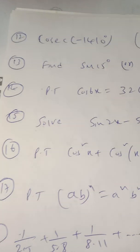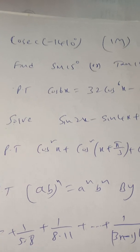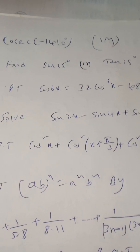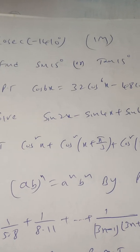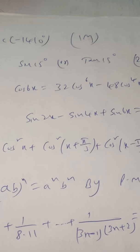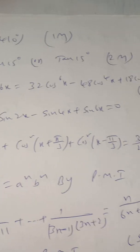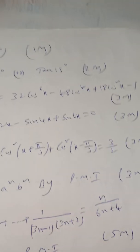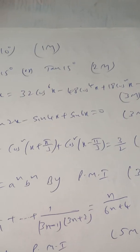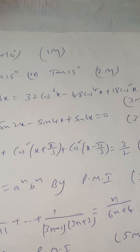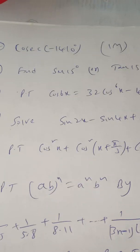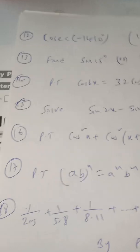One more 3-mark trigonometry question they may ask: prove that cos²x + cos²(x + π/3) + cos²(x − π/3) = 3/2. This is a miscellaneous example question from the textbook and is asked frequently. It is an important question.